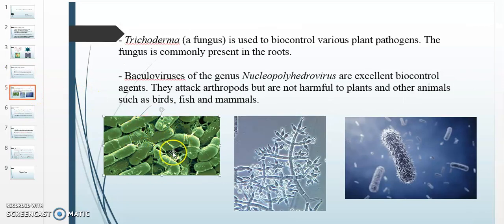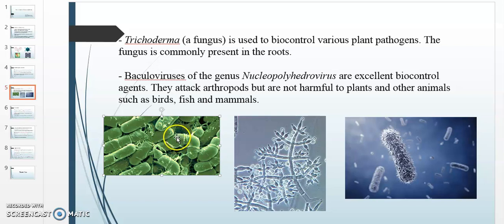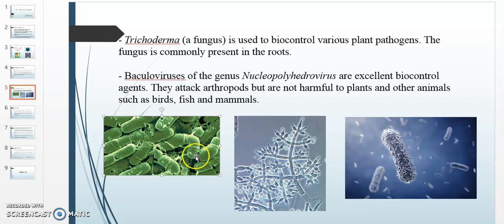Bacillus thuringiensis bacteria produces a Bt toxin, which is a crystalline protein. This crystalline protein is initially an inactive toxin. When it enters an alkaline media — such as the gut of an insect — it becomes activated into an active toxin. This active toxin is harmful to pests and can completely destroy them.